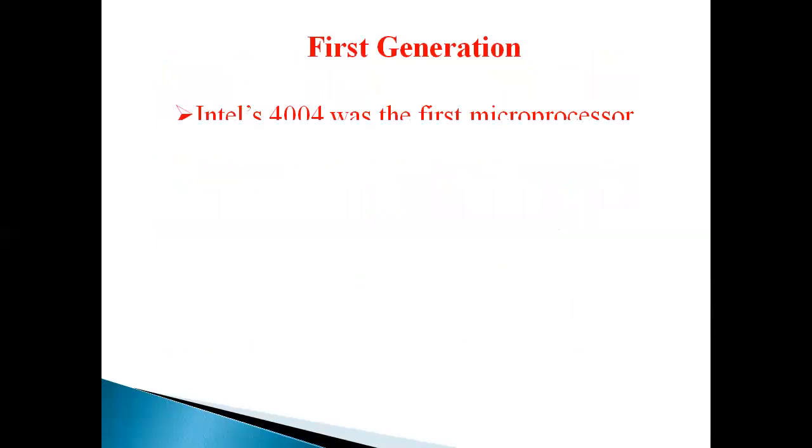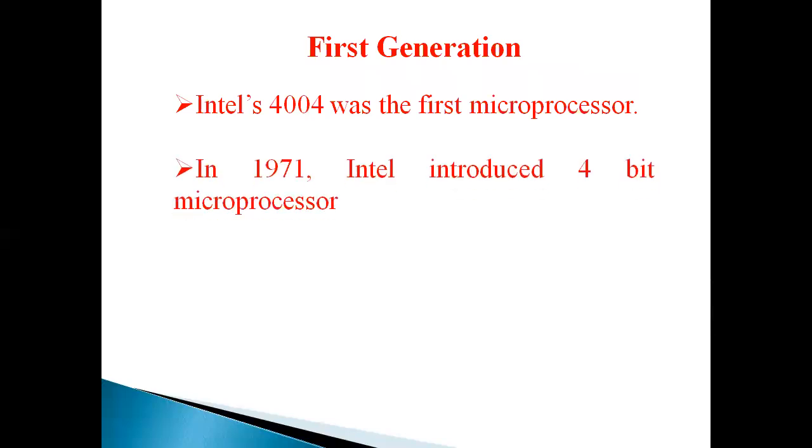First generation: Intel's 4004 was the first microprocessor. In 1971, Intel introduced 4-bit microprocessor. But in fact, it is designed to be used in calculator. It was not a record for general purpose computing. So in 1972, Intel introduced 8008 microprocessor.